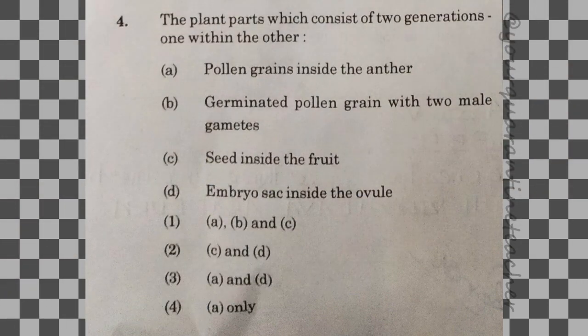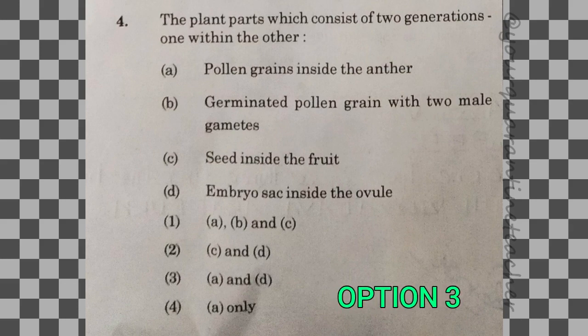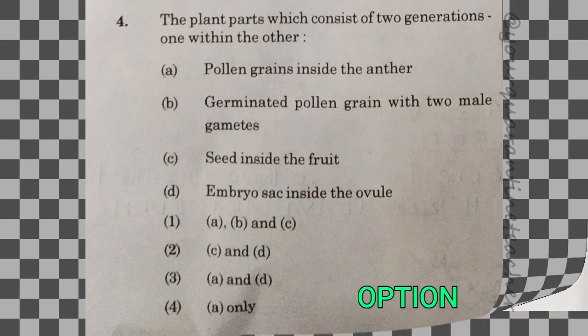Next question: the plant part which consists of 2 generations, one within the other. The answer is option 3 — A and D: pollen grains inside the anther and embryo sac inside the ovule.